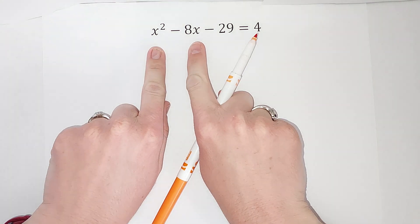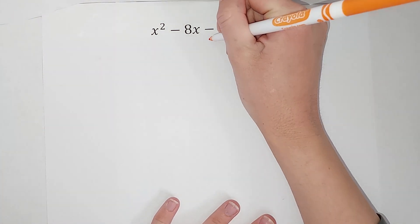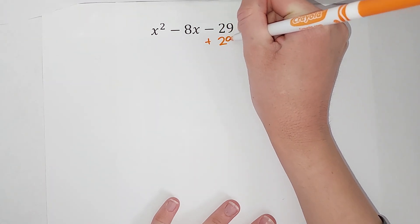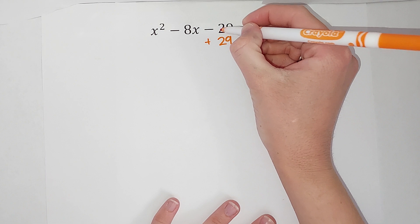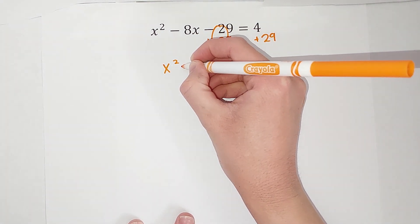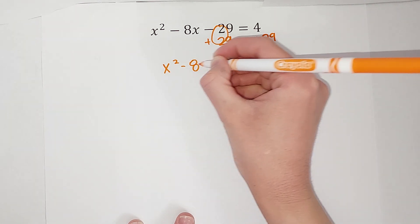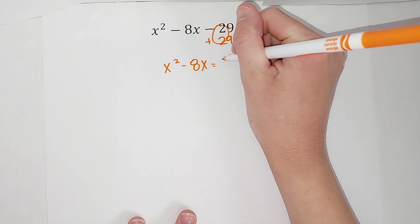First step when I'm completing the square is I want to get my variables alone, which basically means I don't want that minus 29 there anymore. So what do I do to get rid of it? I add 29 to both sides. Keep it balanced. Those go away, so I end up with x squared minus 8x equals 4 plus 29, which gives me 33.